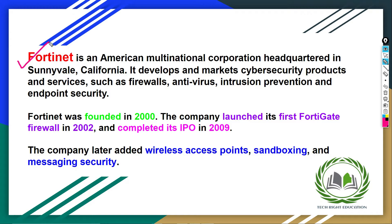Fortinet was founded in 2000. The company launched its first FortiGate Firewall in 2002 and completed its IPO in 2009. IPO means Initial Public Offering. It is a process by which a privately held company becomes a publicly traded company.